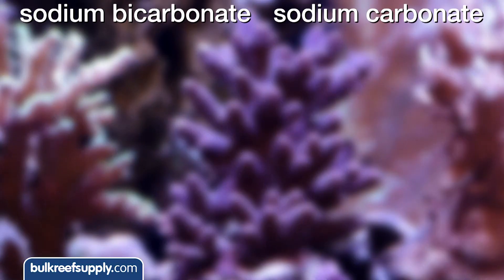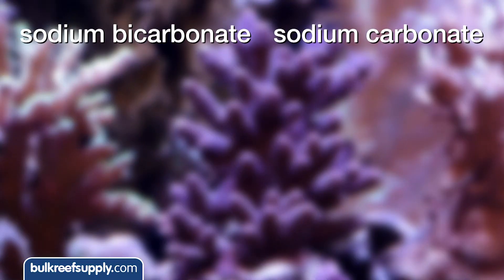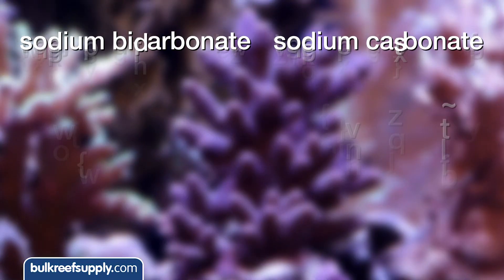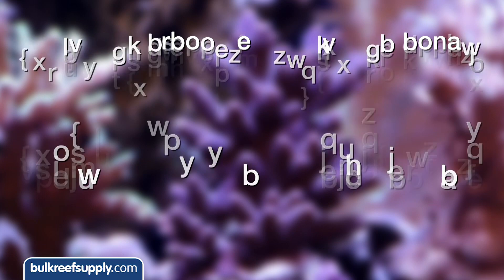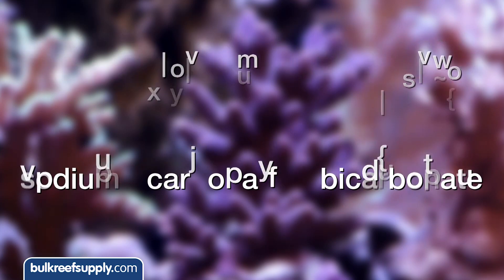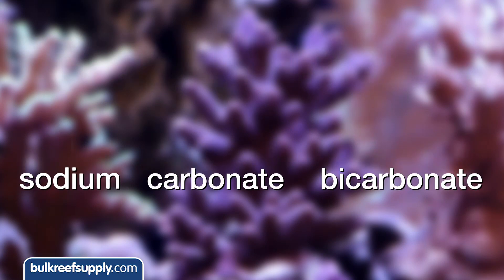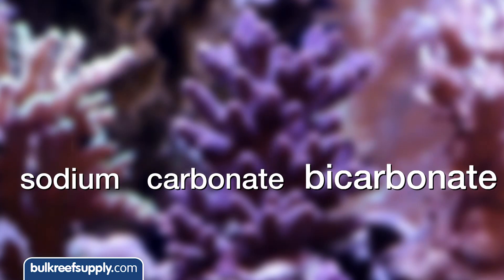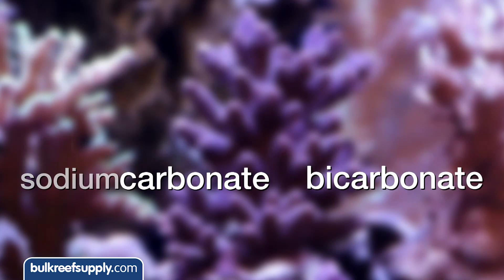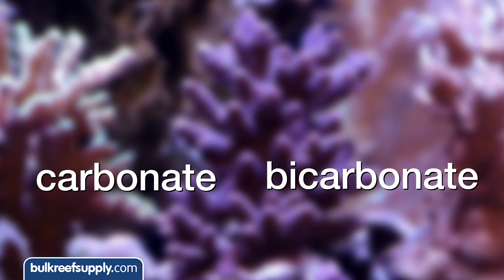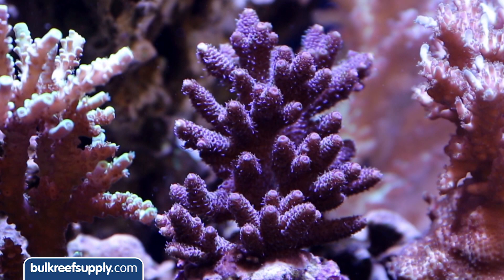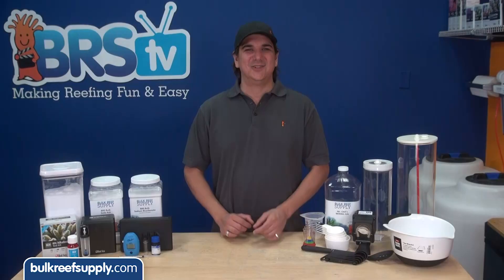Once sodium bicarbonate or sodium carbonate hits a tank it almost instantly ionizes into the separate components of sodium, carbonate, and bicarbonate. It is the last two — carbonate and bicarbonate — which replace the carbonate consumed by the corals and raise the alkalinity back up.